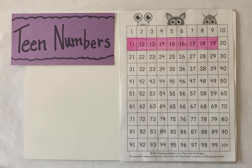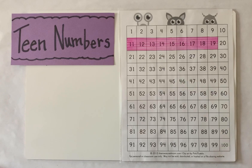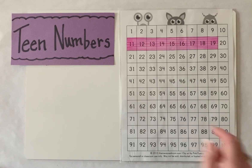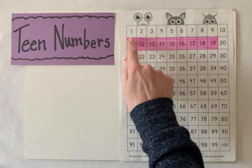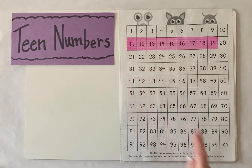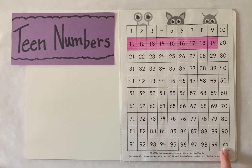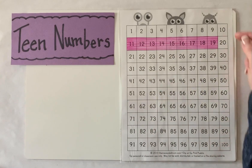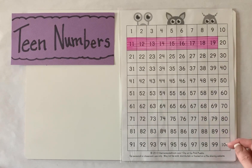Today we're going to talk about teen numbers. Remember in our last unit — counting to 100 — we learned how to count from 1 to 100, both by 1s and 10s.